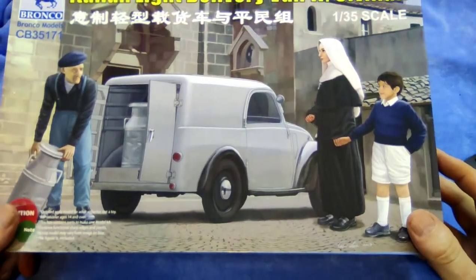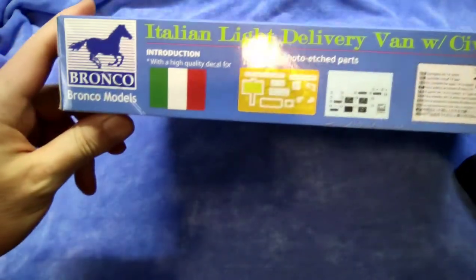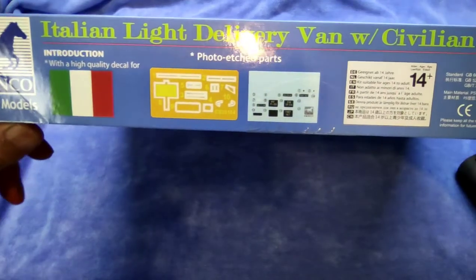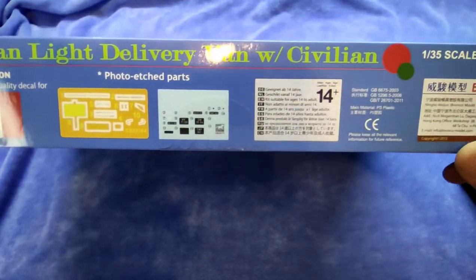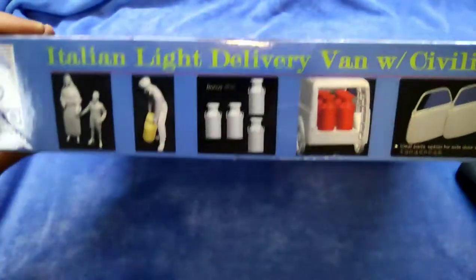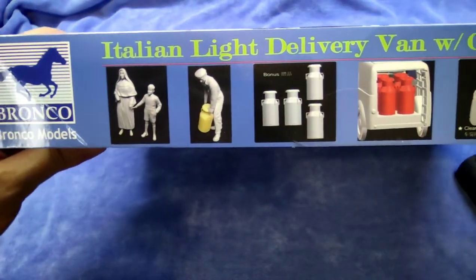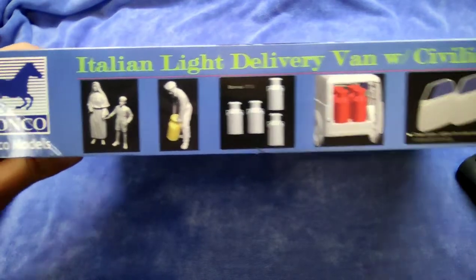And it's in one to thirty-five. Let's have a quick look at the size box. It talks about the photo etch parts and the decals. Here's what we had in front here. It gives you the extra parts because this kit first came out in 2013 as a military vehicle.